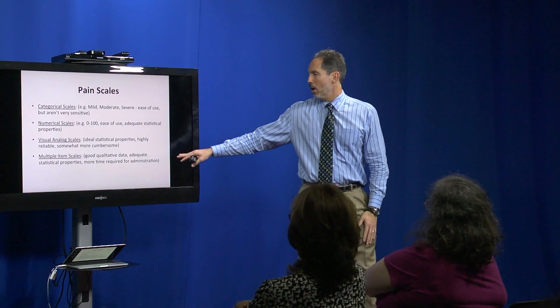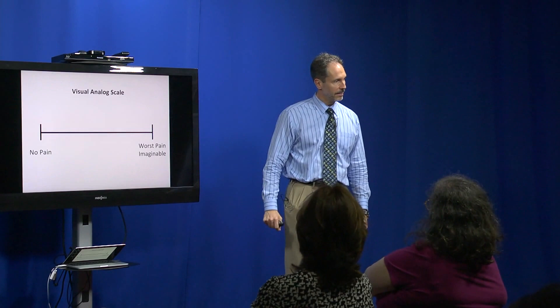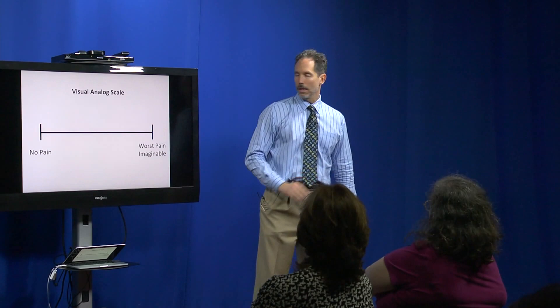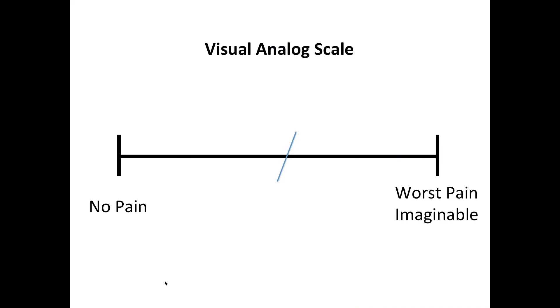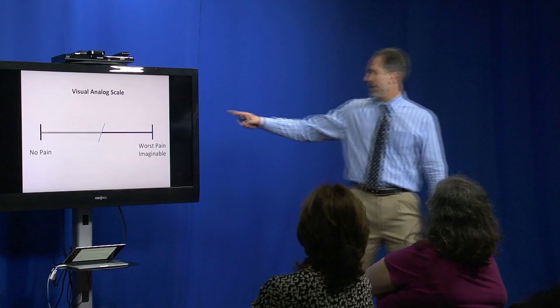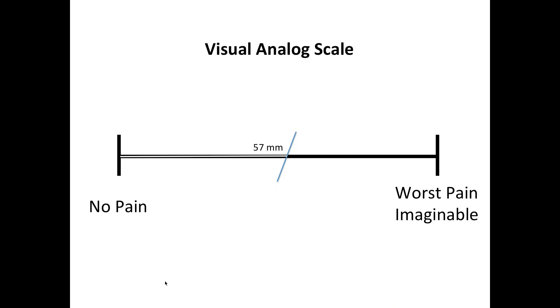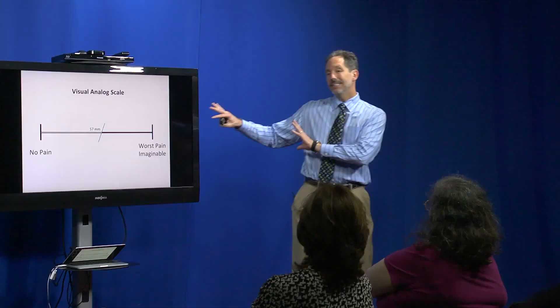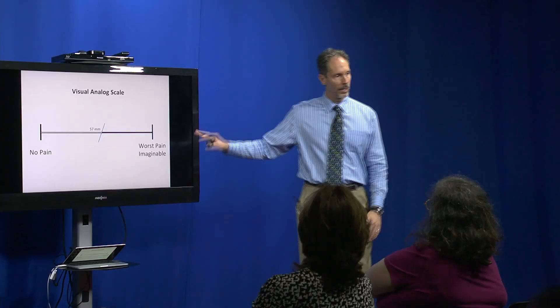In a study we're doing, we could present somebody with a visual analog scale—a line on paper—and ask them to bisect it to indicate where their pain is, going from no pain to the worst pain imaginable. I would measure the distance from the no-pain end to their mark—for example, 57 millimeters on a 0-to-100 millimeter visual analog scale. This is statistically the best way to measure pain, although numerical scales are typically a satisfactory substitute, especially since older adults tend not to do as well with visual analog scales.